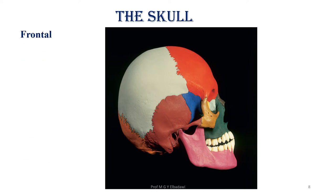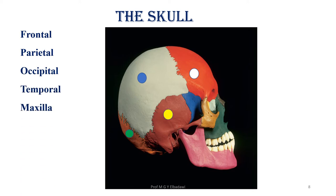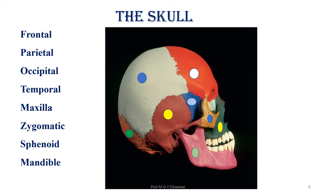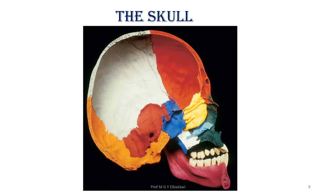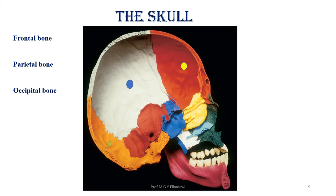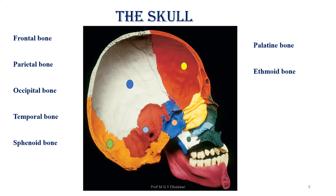Looking from the norma lateralis, we can see the frontal bone, parietal bone, occipital bone, temporal bone, maxilla, zygomatic bone, sphenoid, and mandible. When you look from inside for the same bones: the frontal, parietal, occipital, temporal, sphenoid in blue, palatine in yellow, ethmoid bone, inferior nasal concha which is a separate bone, the maxillary bone, and the mandible.